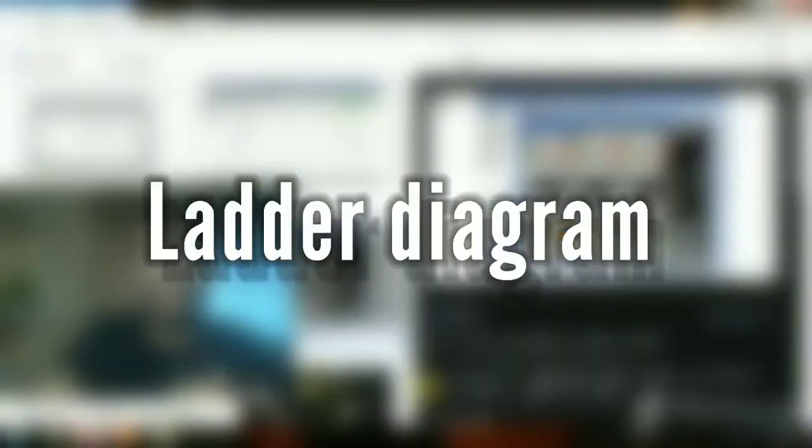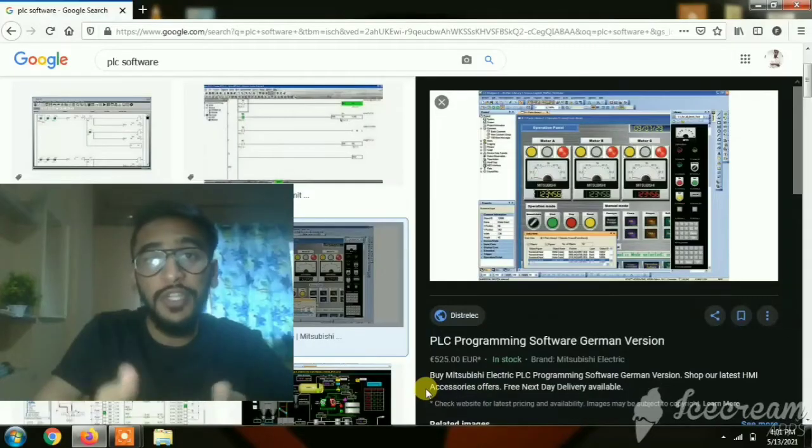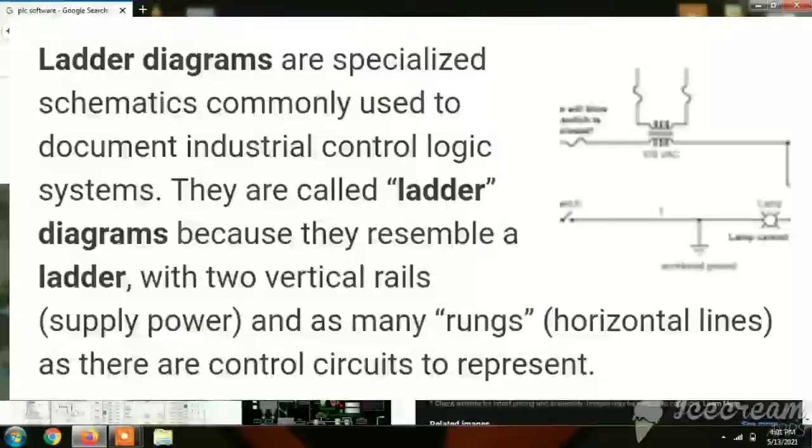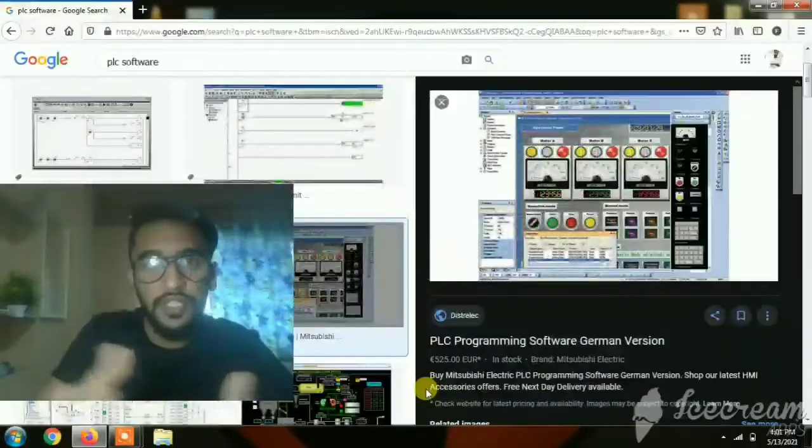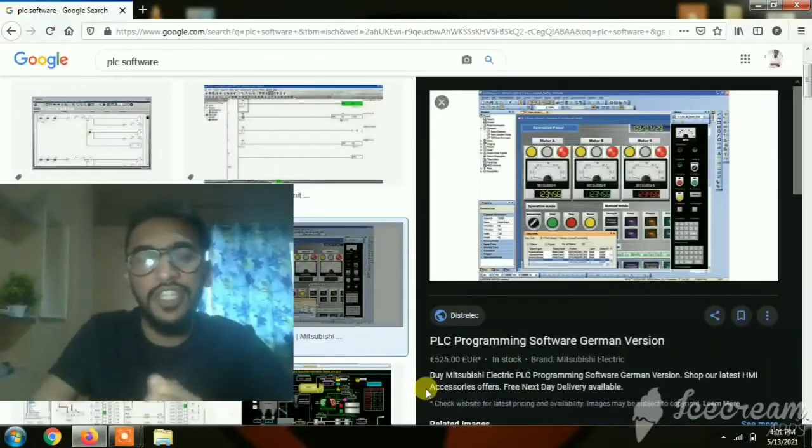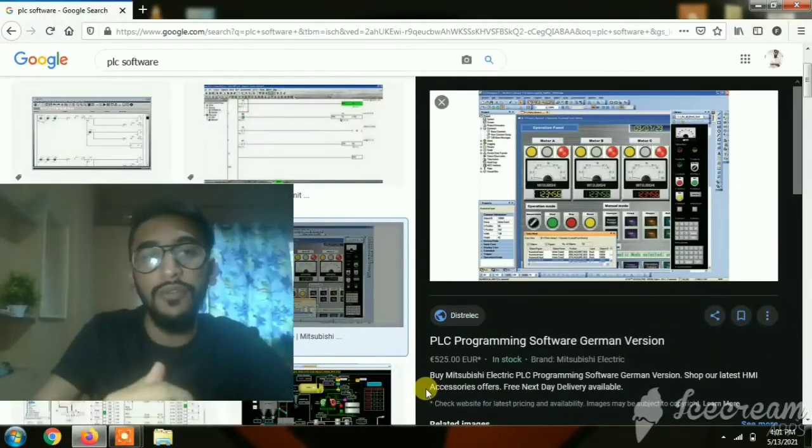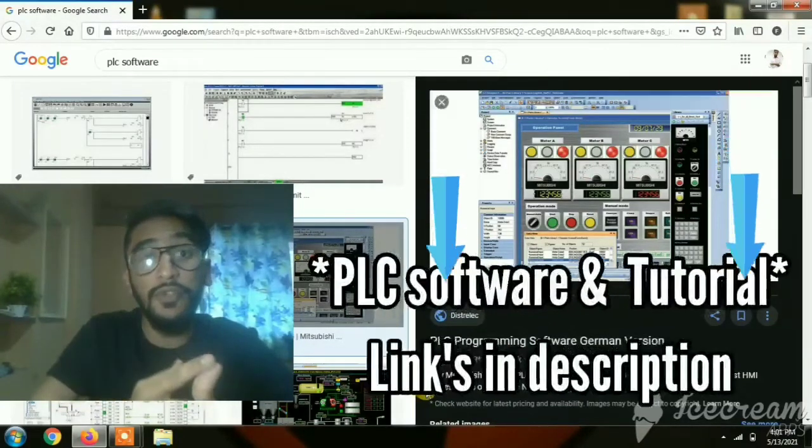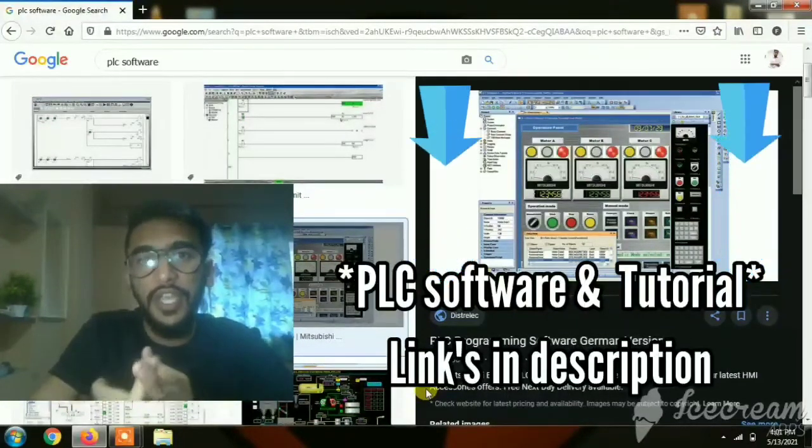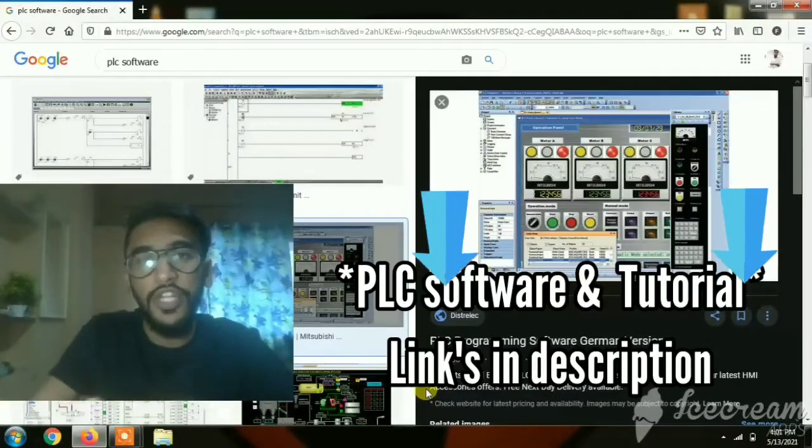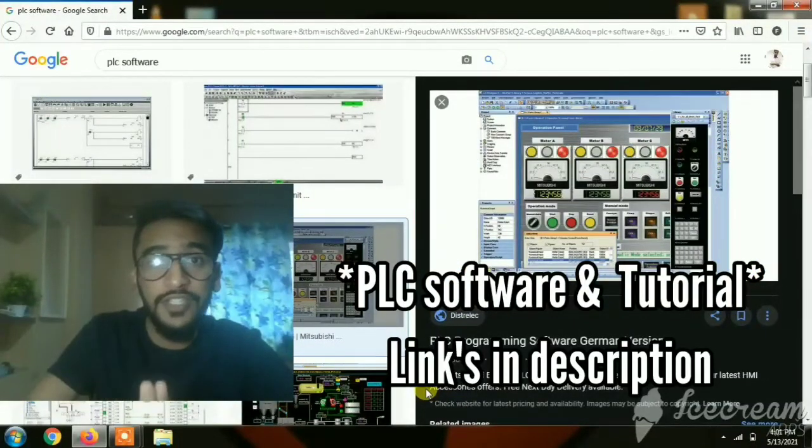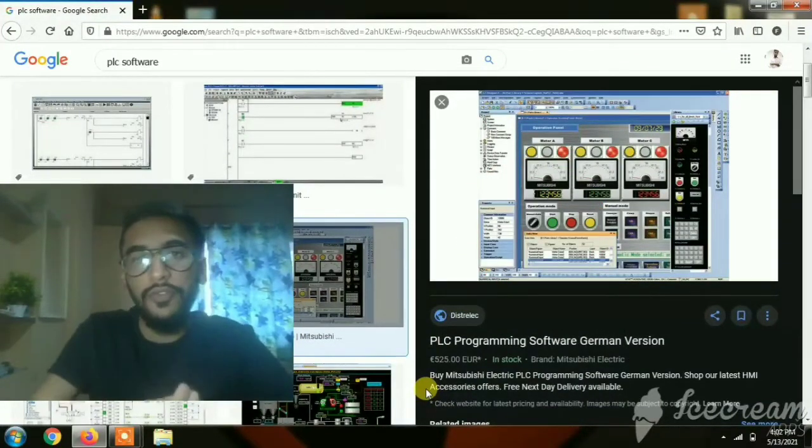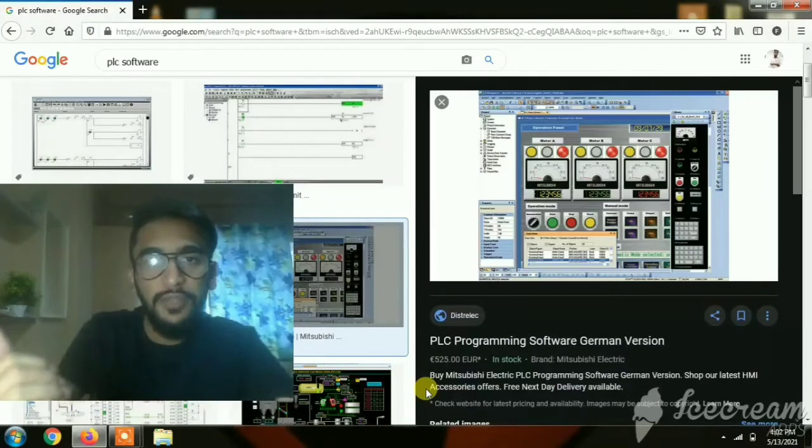Let's discuss ladder diagram. Ladder diagram is a language used to program PLC where it has rungs or branches. You have to drag and drop bits like normally open, normally close, examine if close, and examine if open bits that operate according to how you program your PLC. This is how the PLC operates according to its program.